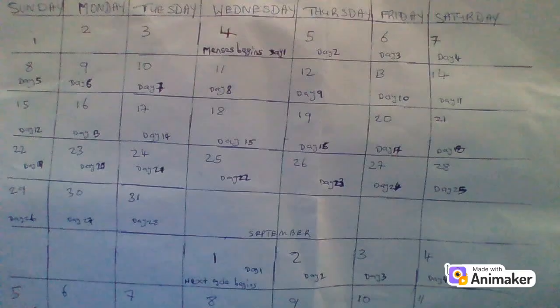In this calendar, we use the months of August and September for a 28-day cycle. Menses began on the 4th of August, which is counted as day 1 of your menstrual cycle, and the 5th of August as day 2, up to the 31st which is the 28th day of your menstrual cycle. Your next cycle begins on the 1st of September, which is the first day of the next cycle. You can pause the video to study the calendar.